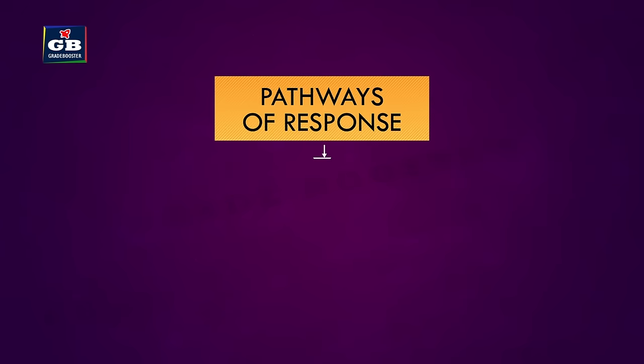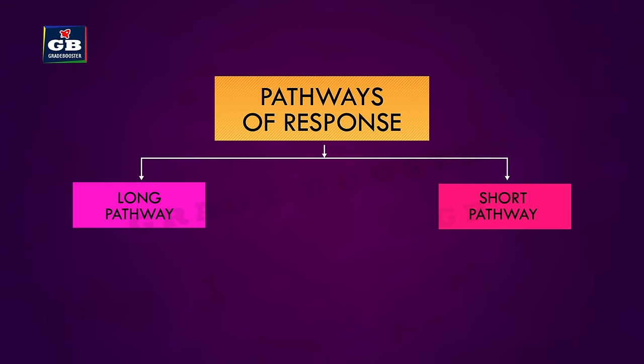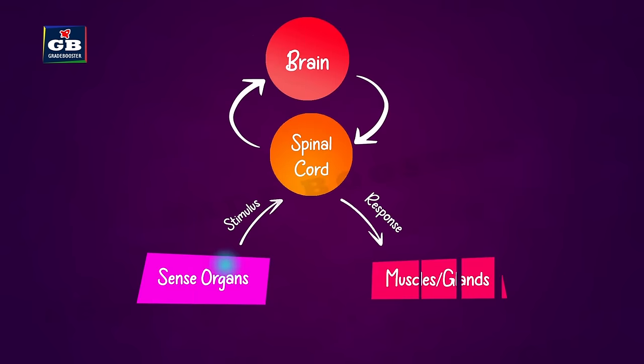The neurons that carry information from the brain or spinal cord to muscles or glands are called motor neurons. There are two pathways in which responses are produced to stimuli.